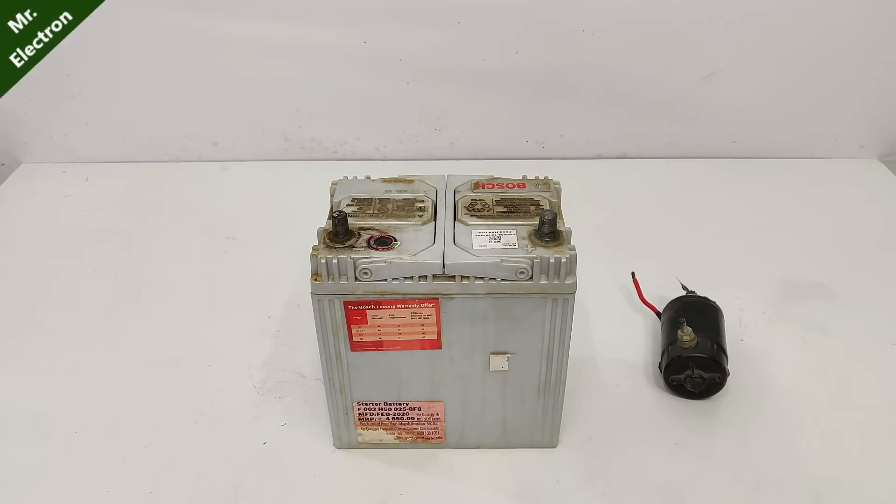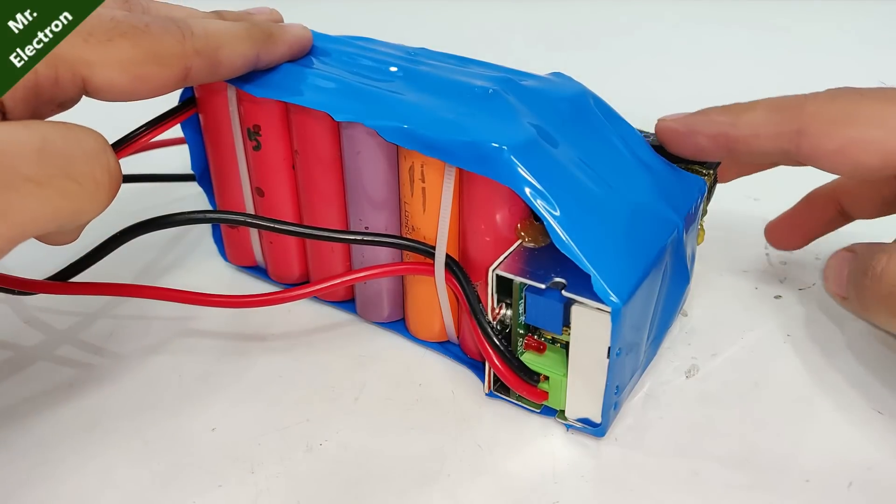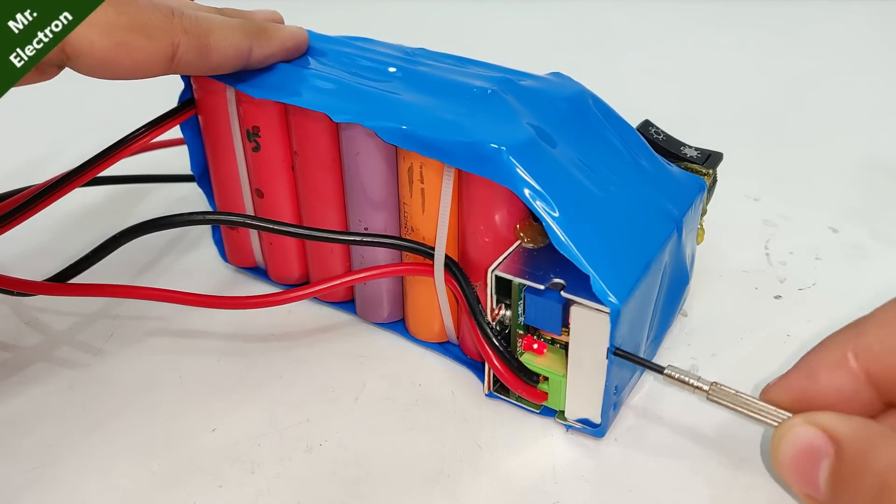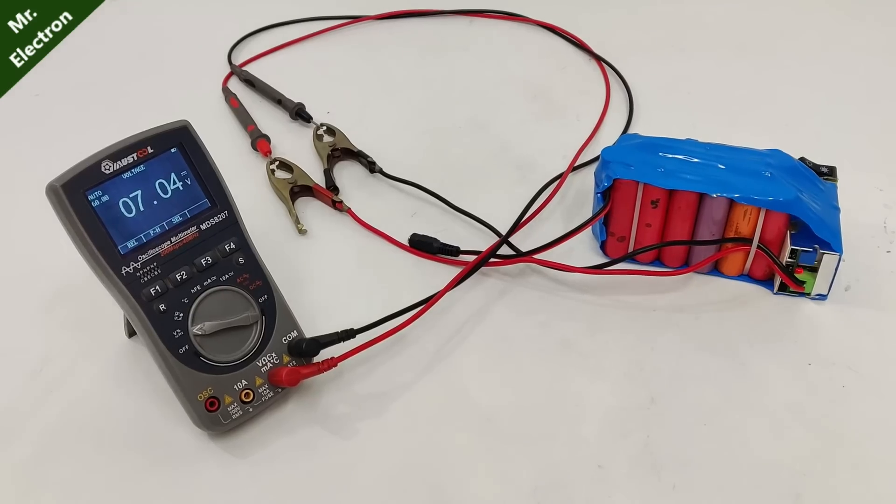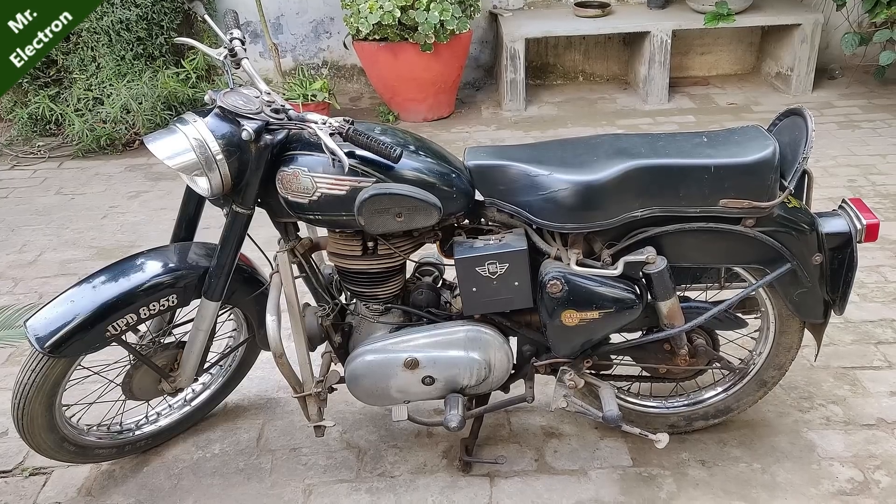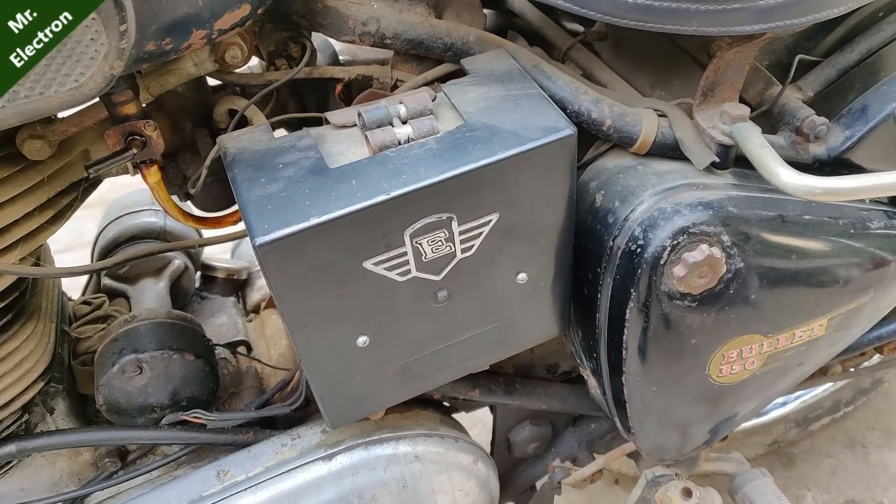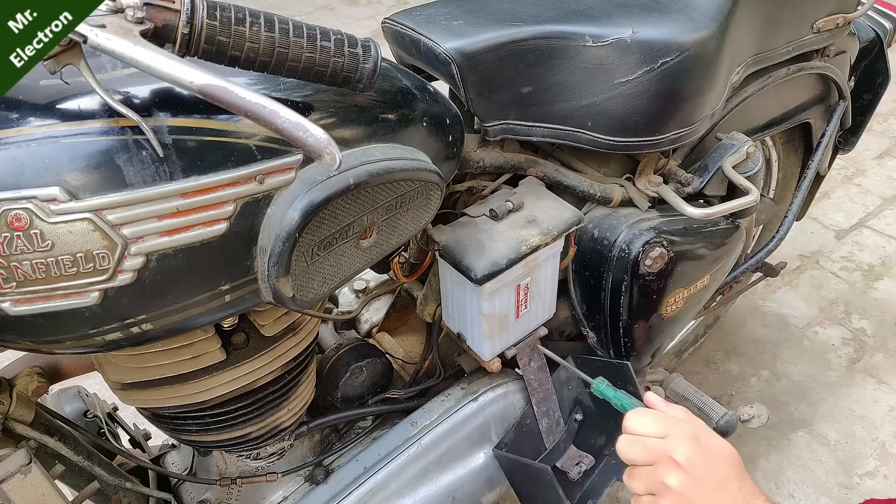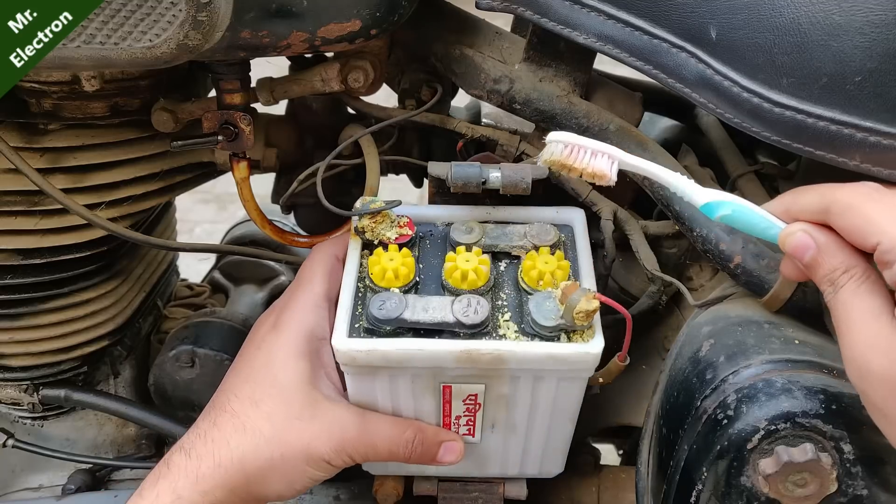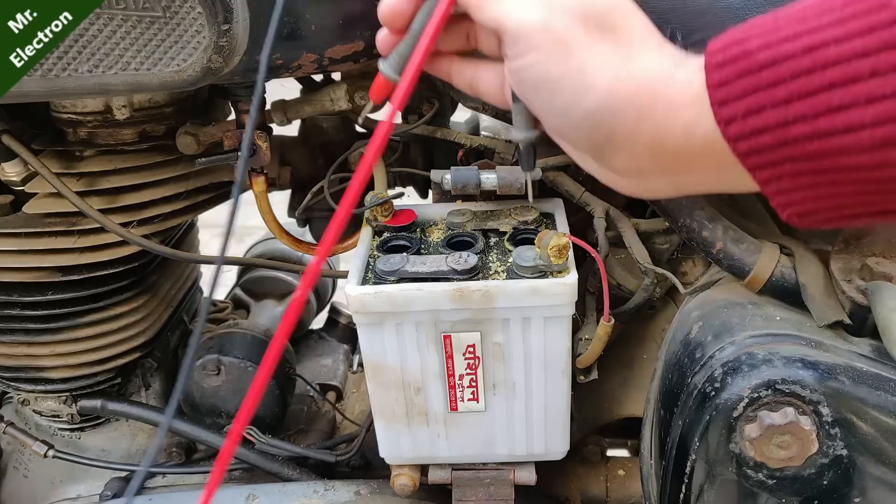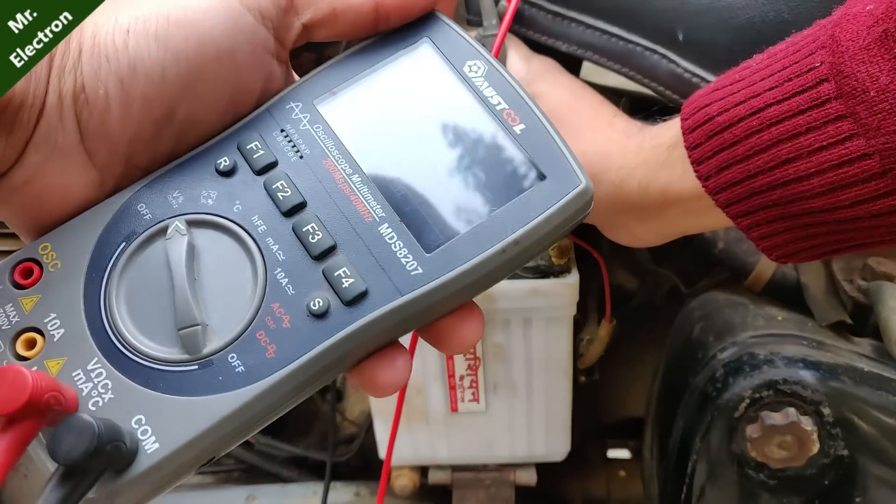So yes the battery has revived. Now let's set the potentiometer of my battery charger to 7 volts because I have this Royal Enfield vintage bike which has a battery of 6 volts.